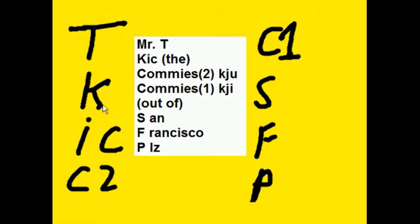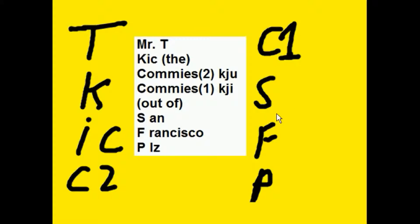What do these guys represent? Mr. T represents the system timer, the keyboard, and the interrupt controller. Then we have comm port 2, comm port 1, the sound card, the floppy disk controller, and the parallel port.